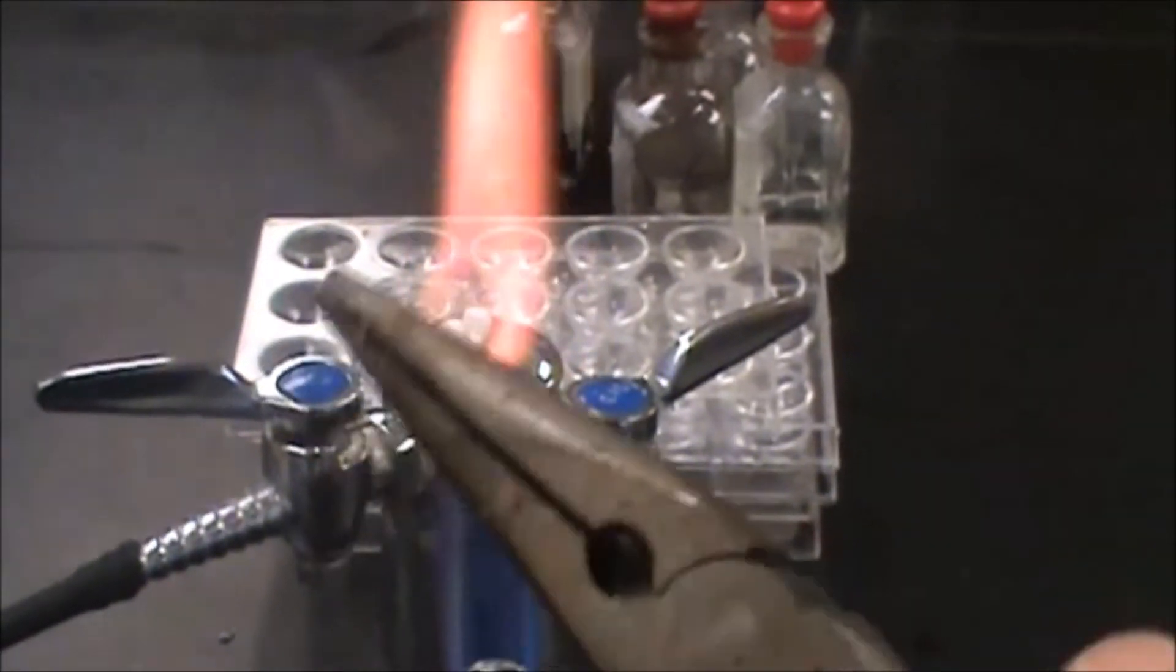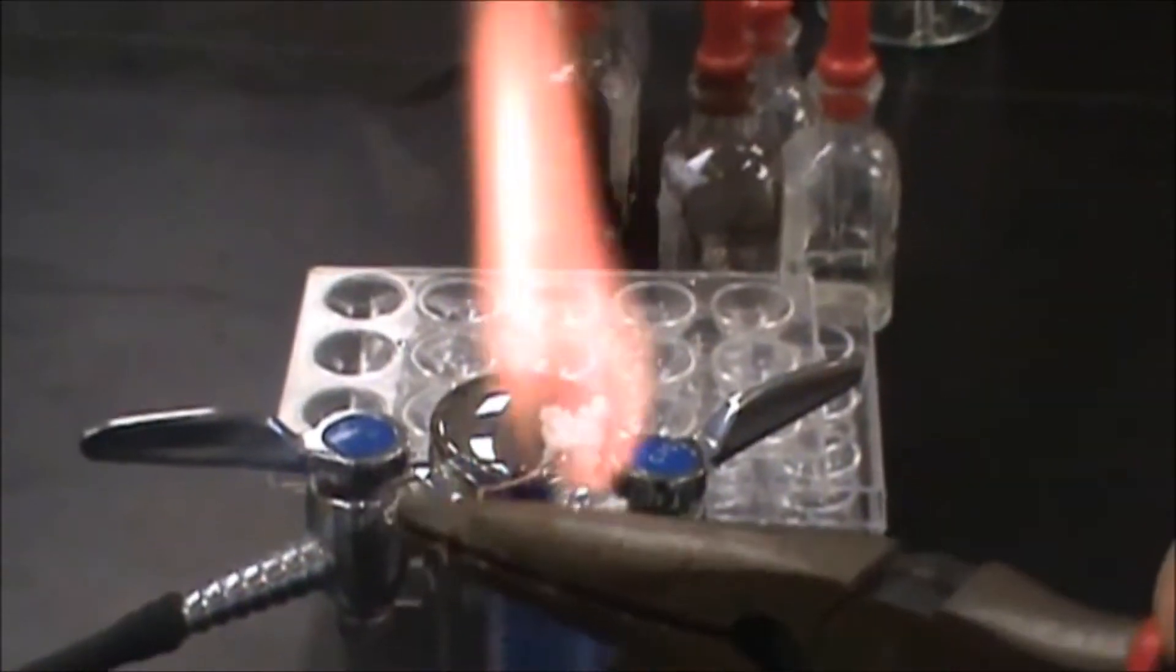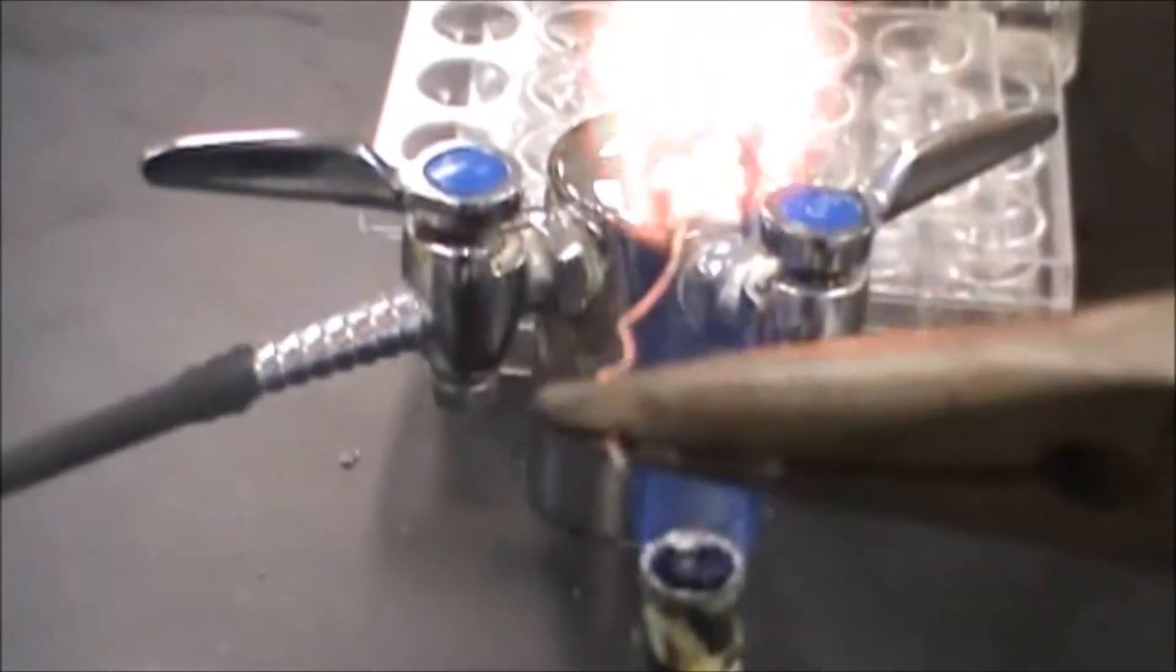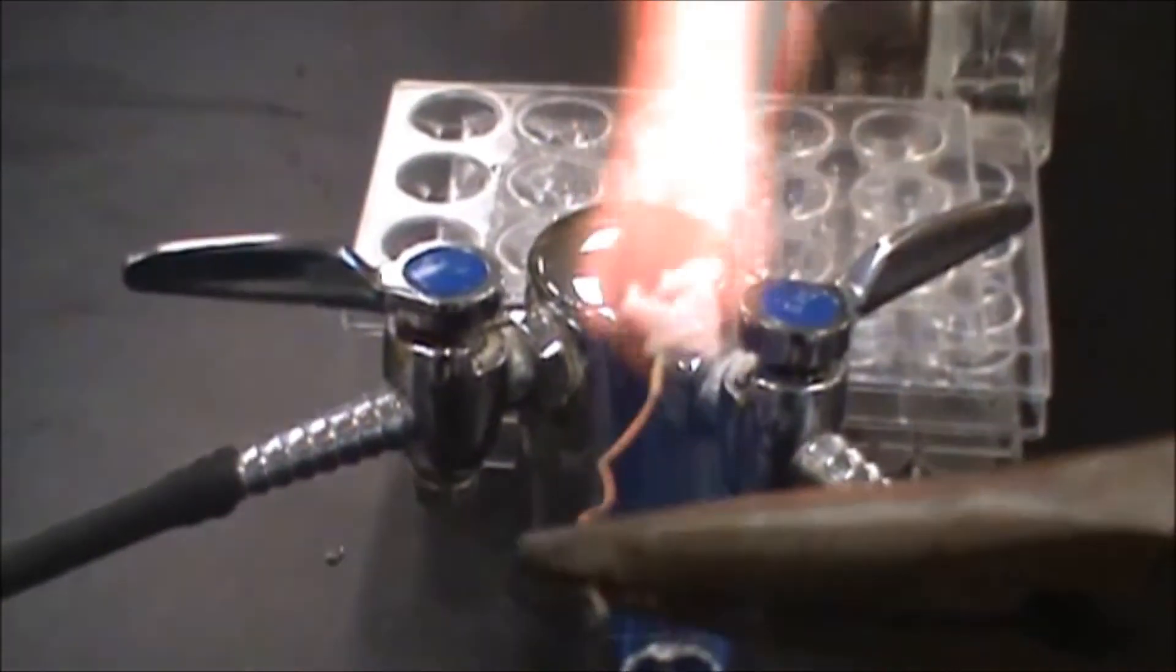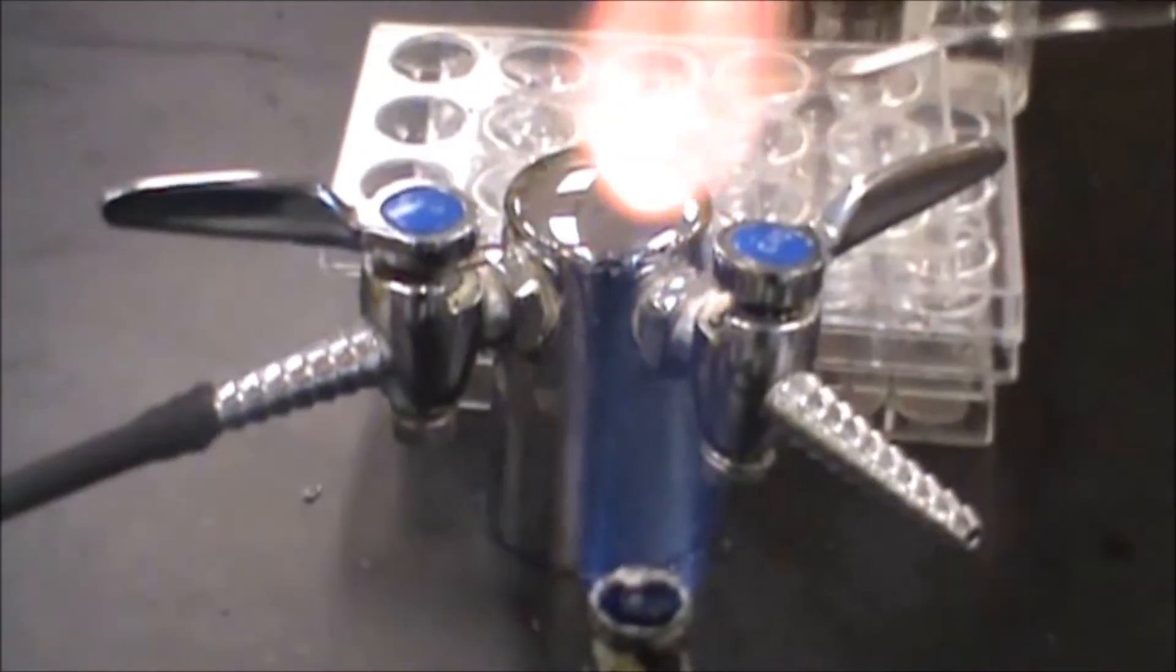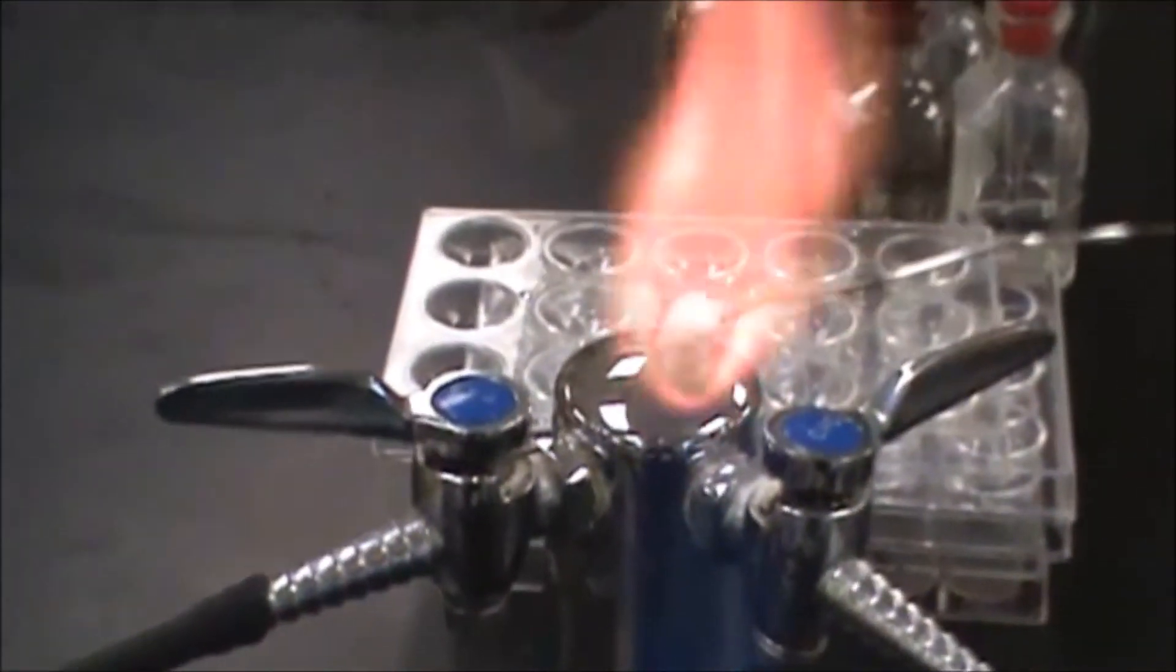We're going to melt that into a bead. It generally takes a couple applications to get a big enough bead because it's going to shrink down a lot when it gets to the very end and it actually melts. What we want to get is one solid blob as best we can.